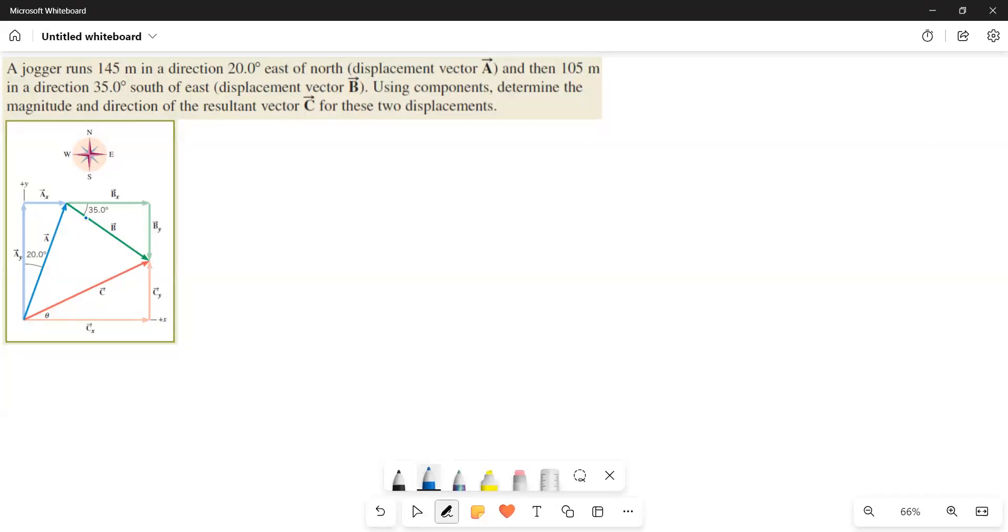Now what we have to do is we have to resolve the vectors into components. X component of A is equal to Ax, similarly y component is Ay, and next x component of B bar, Bx, and then y component of B bar is equal to By.